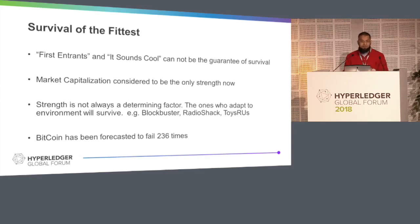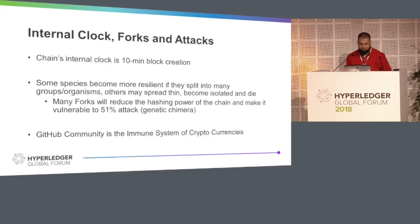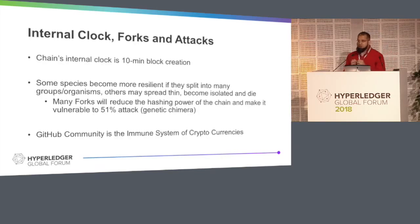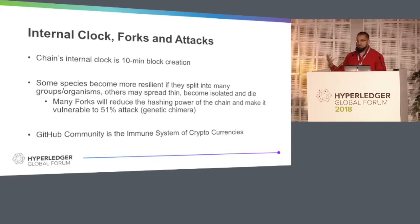Bitcoin, by the way, has been forecasted to fail 236 times, and it still didn't. The blockchain chain is the internal clock — I call it their own system of creation — while the GitHub community equals our immune system. Whatever viruses and disease are coming in, it's killing those viruses and making sure that the whole species — cryptocracy as a species — would survive.